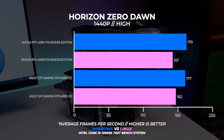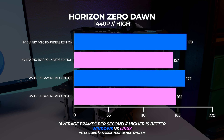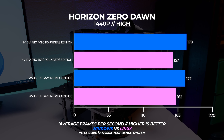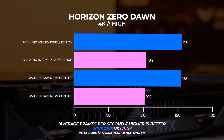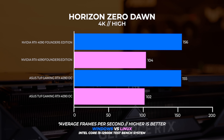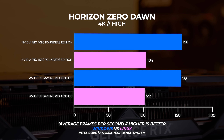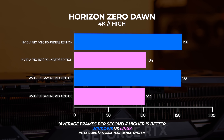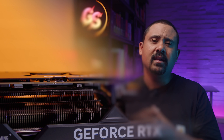Moving on to 1440p, we're seeing similar results once again — we're pretty CPU-bound with the RTX 4090 in both Windows and Linux, but no surprises that Windows comes out on top. Lastly at 4K, we're seeing both the ASUS and the Founders Edition cards pulling well ahead in Windows by about an average of 50 frames per second. I actually retested this quite a few times just to verify the findings.